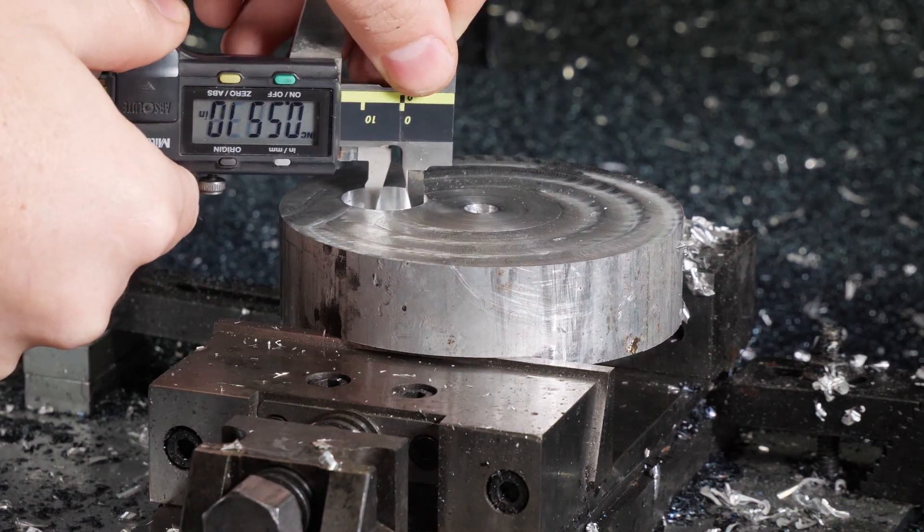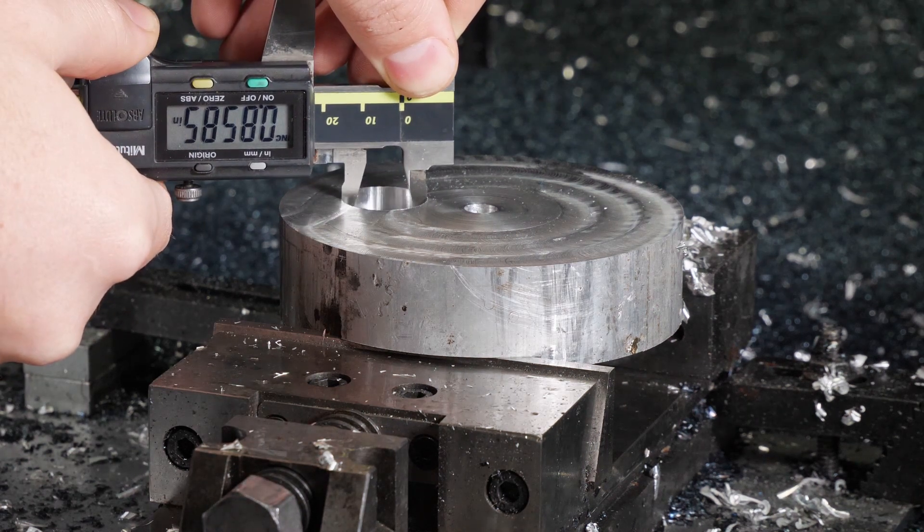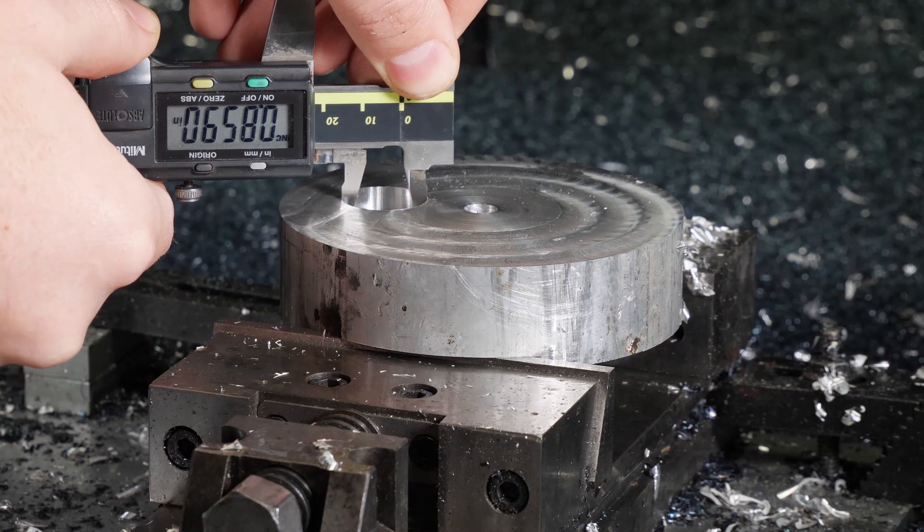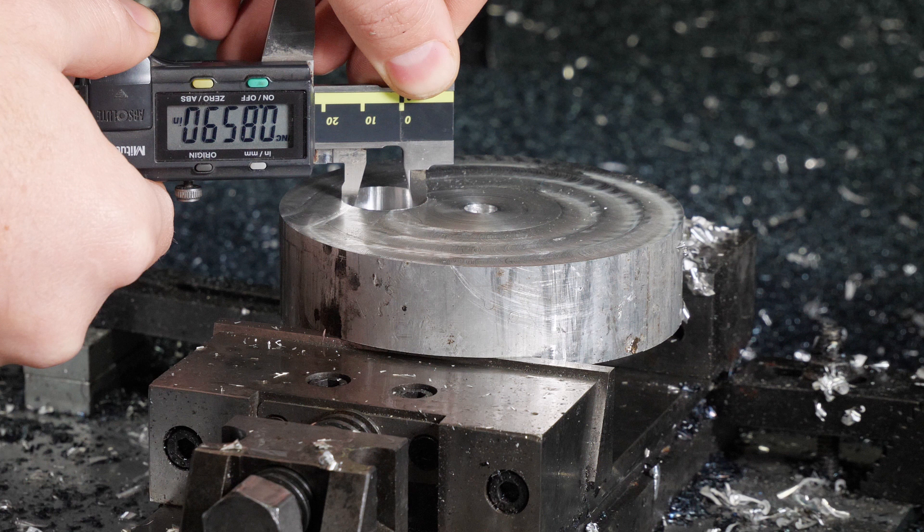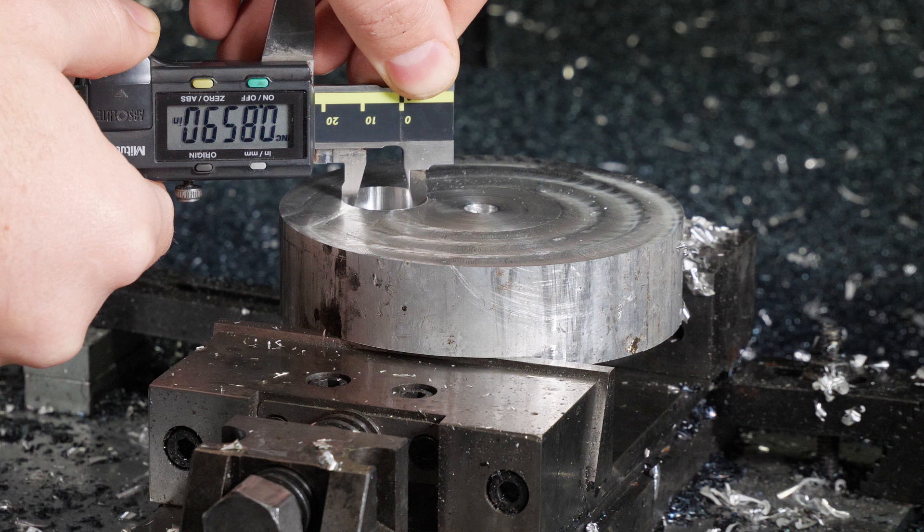So recall that our pocketing operation should have finished with some stock to leave giving us a diameter of 0.861. So not surprisingly I'm measuring 0.859 here. Since the finished pass on this contour was at full depth, it looks like the tool did deflect a little bit inward causing a hole that is about two thousandths undersized. Now you're probably thinking that's not terrible.